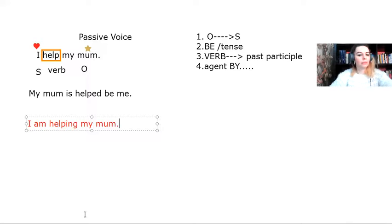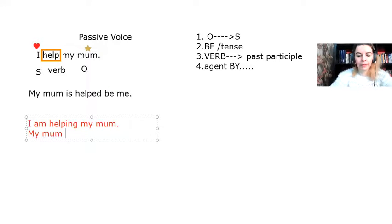Now, let's follow the steps once more. So, the first thing that we said we do is front the object and make it subject my mom and then what I need to do is use the verb be in the tense of the verb. The verb here is present continuous. So, I need present continuous of the verb be.